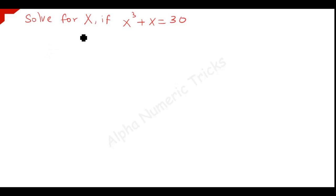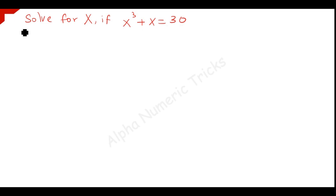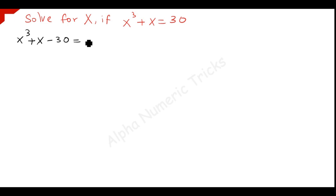Hi guys, now we are going to solve this algebraic equation x cubed plus x equal to 30. Here you can take this constant term to the left hand side, so x cubed plus x minus 30 equals 0.